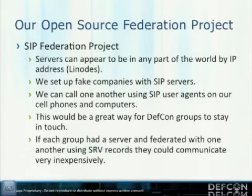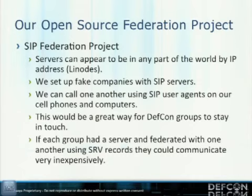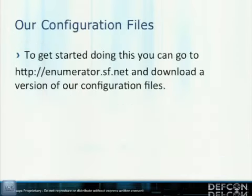We have an open source federation project running on Linode nodes that we can bring up or down in IP ranges of any country we want at any time. We set up fake companies with websites, SIP servers, and email servers tied to them. We can call one another using our cell phones and it works very well. If you want to check out our configuration files, go to the same SourceForge website — enumerator.sourceforge.net — where we have redacted copies of our federated Asterisk configs.